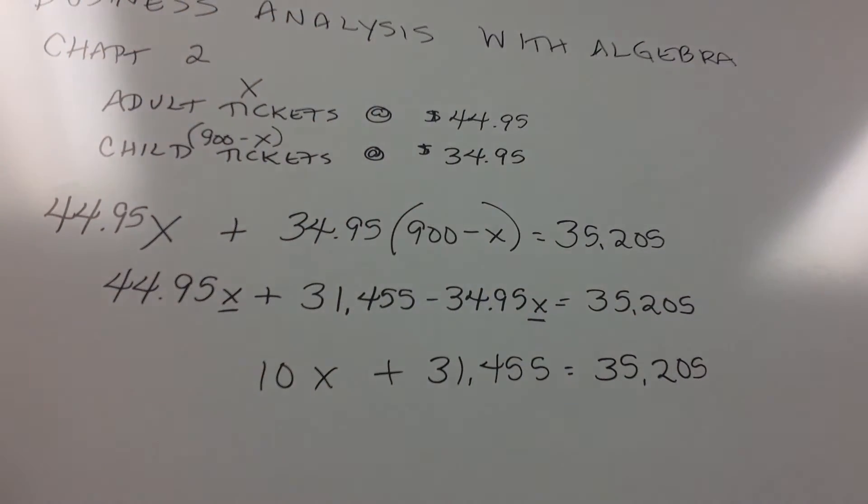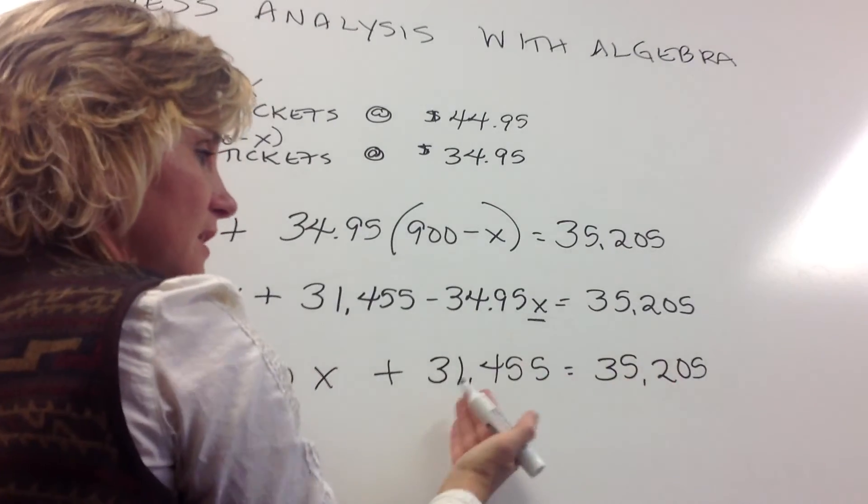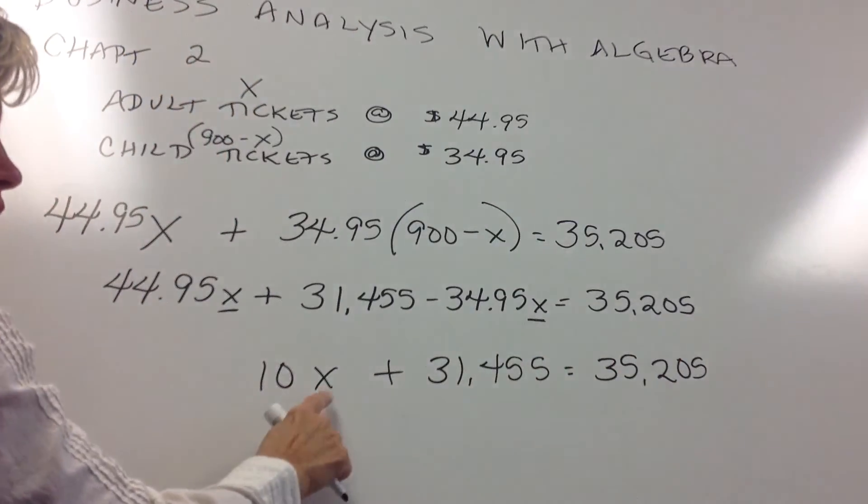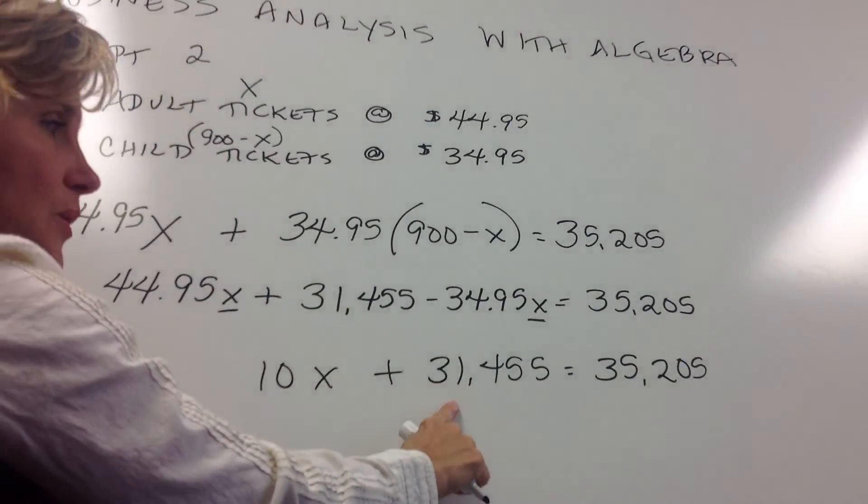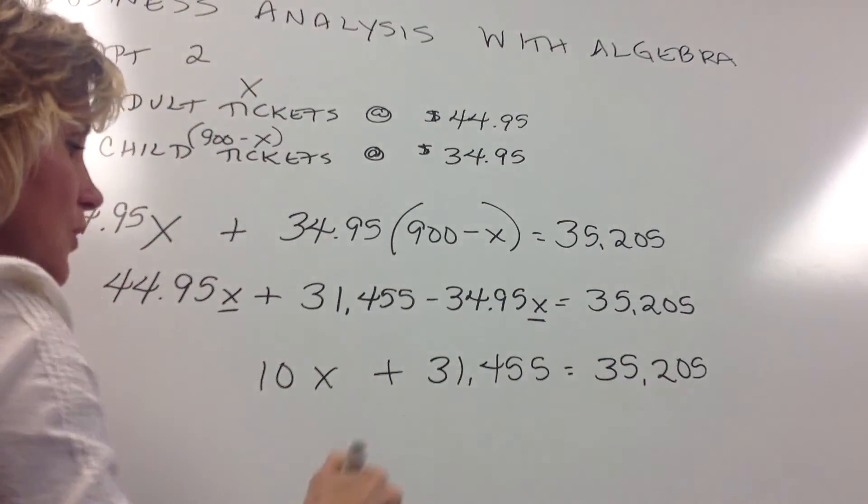Then we have the equation kind of back to what we're used to. So again, we want to do to the one side of the equation what we do to the other. So if our goal is to get the X by itself, we're going to subtract $31,455 from both sides of the equation.